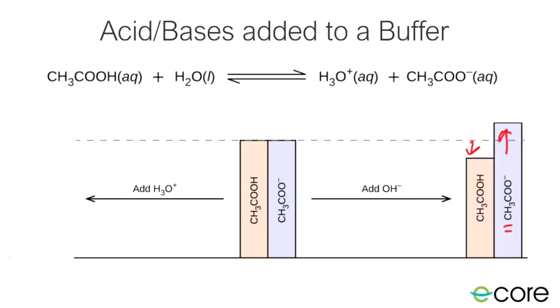The opposite thing happens when we add acid to our buffer system. The added acid is going to react with our acetate ion. It's going to put a hydrogen on it, and it's going to make it look like our acetic acid. And so what we see in that case is our acetic acid concentration goes up, while our acetate ion concentration drops.